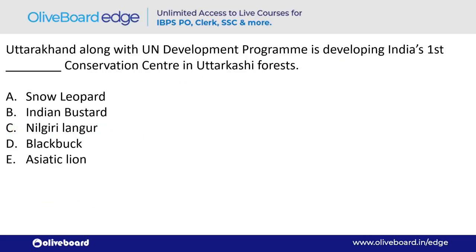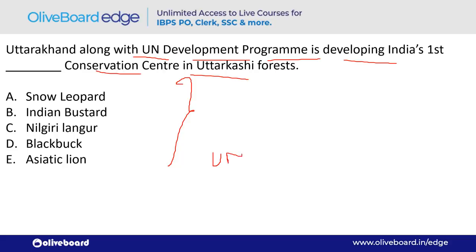Uttarakhand, along with the UN Development Programme (UNDP), is developing India's first conservation center in Uttarkashi forest. This is a Snow Leopard conservation center in Uttarkashi forest.